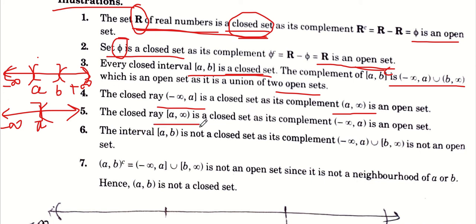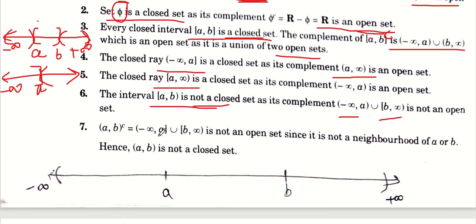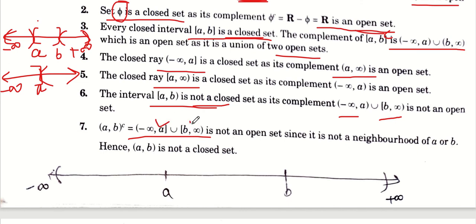Similarly [B, ∞) भी closed हो जाएगा। लेकिन जो set (-∞, A) ∪ (B, ∞) है - ये set closed नहीं है, क्योंकि इसका complement [A, B] आता है जो open नहीं है, इसलिए union open नहीं होगी, तो ये closed set नहीं होगा। Open interval (A, B) का complement निकालें तो दोनों sets open नहीं हैं, इसलिए complement open नहीं होगा, तो open interval (A, B) closed set नहीं है।